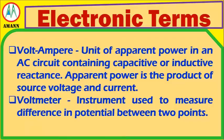Volt-Ampere: A unit of apparent power in an AC circuit containing capacitive or inductive reactance. Apparent power is the product of source voltage and current. Voltmeter: An instrument used to measure difference in potential between two points.